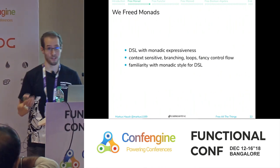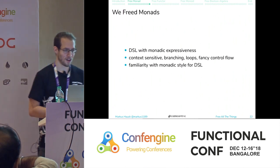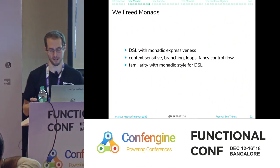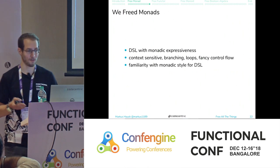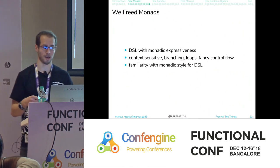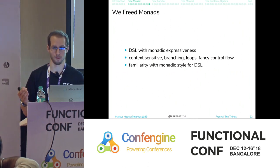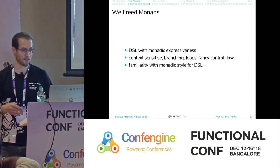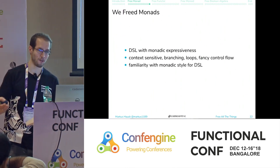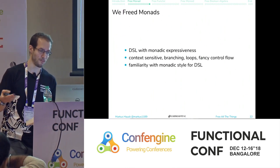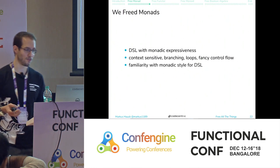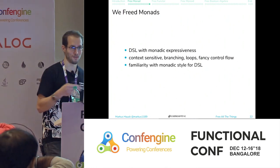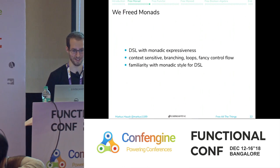With this we're done with the free monad. We have a DSL with monadic expressiveness — context sensitivity, branching, loops, fancy control flow. If you want to learn more, go to a free monad talk. Now let's go and free the functor.